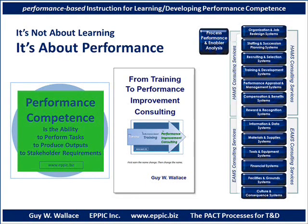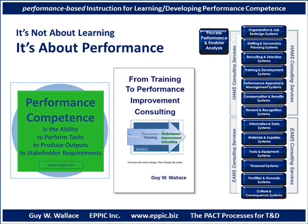These are traditionally human resources type organizations and processes, and have a major impact on the humans involved in process performance. But there are other factors: information and data, materials and supplies, tools and equipment, the financial systems, facilities and grounds, and the culture and consequence systems also impact process performance. Understanding these, and how to affect and align these to the needs of the processes, is what From Training to Performance Improvement Consulting is all about.